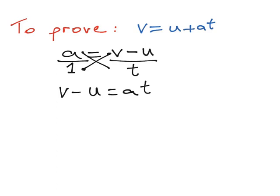The final step in this proof is to add a U to both sides, or you can think of it as bringing the minus U over your equal sign and that will turn that into a plus U. So you end up with V is equal to U plus AT and that is our proof finished.